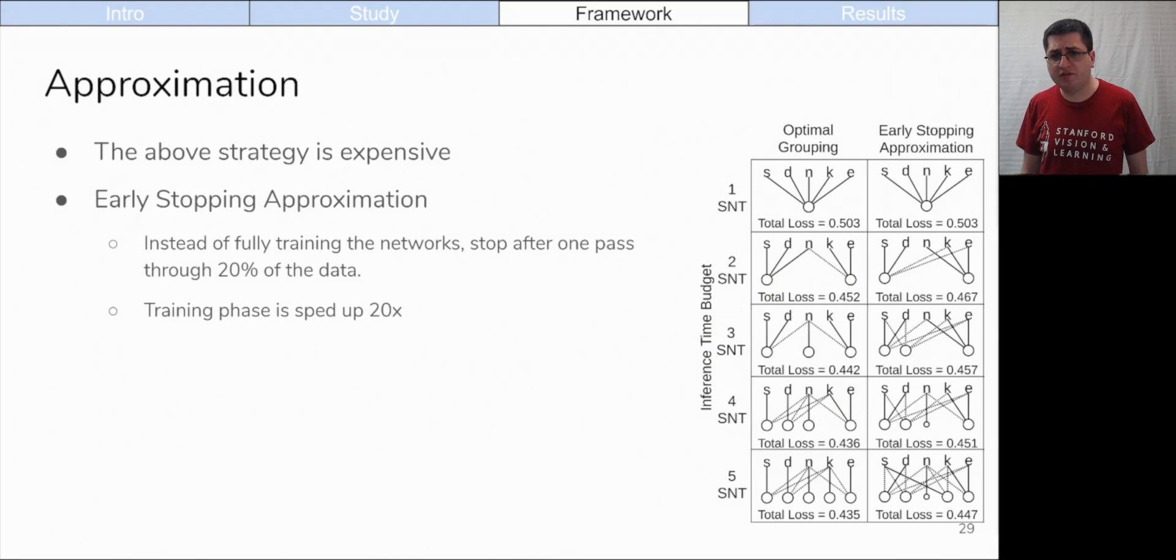But this strategy is expensive. It requires that we train a large candidate set of networks, even though we only ultimately use a few. In many situations, it might be worth it to train an exponential number of candidate networks to ensure that you have the optimal grouping. You may even want to throw in networks trained with different architectures, task weights, or training strategies. But sometimes this is prohibitive. To alleviate this burden, you can train each of the networks just a little bit, and based on their performance after just a little bit, choose which of the networks to train to convergence. We show that this works well even when we only do a single pass through only 20% of the data, and that speeds the training phase up by 20 times. We can see that the networks chosen for various budgets are different for the approximation, but their performance is similar.